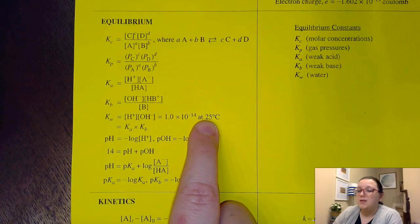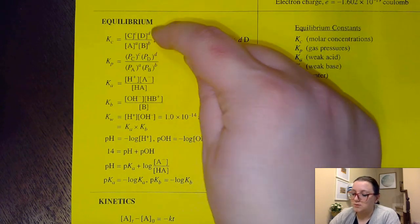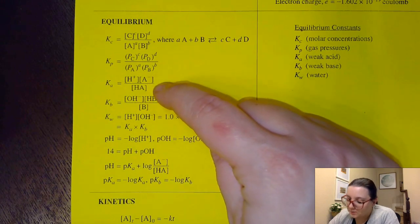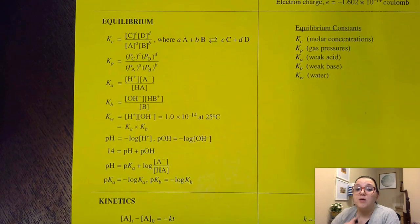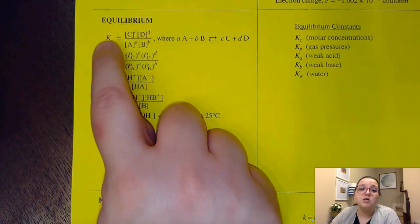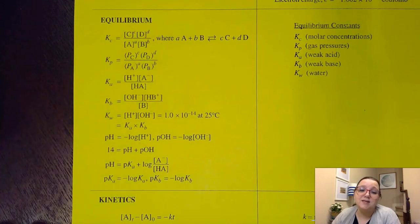Now, I'll be honest with you. In this unit, we're going to focus mostly on KC and KP. However, we are going to deal with KA, KB, and KW in our next unit. The only equilibrium expression that is not shown on here is KSP. However, it follows that general format of the KC. So the fact that KSP isn't on here is really not that big of a deal.